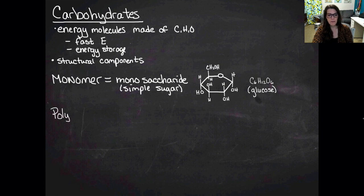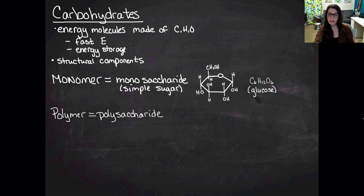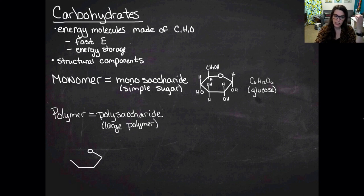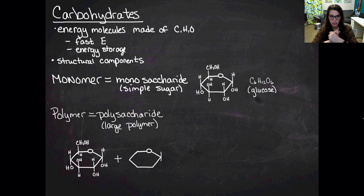A polymer of carbohydrate is going to have many simple sugars, so we're going to call it a polysaccharide. Just for the record, I'm going to draw two sugar molecules together - that would be a disaccharide. So a polysaccharide is a large polymer, a long chain of simple sugars. Let's see how those form. They're going to form pretty much the same way that we had in our generic drawing of dehydration synthesis.